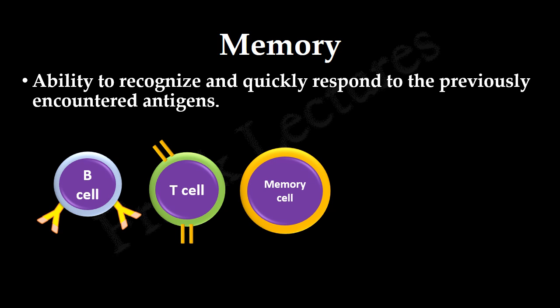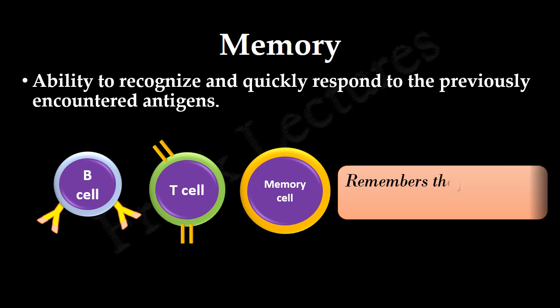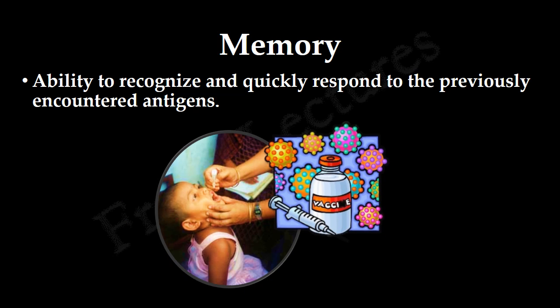The next time the same antigen attacks, the immune response is faster and stronger, because the adaptive immune system remembers the pathogen and produces large quantities of the same T-cells or antibodies. This memory forms the basic principle of vaccination, which will be covered in coming video lectures.